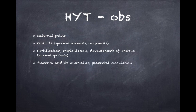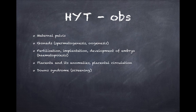Placenta and its anomalies — everything from development to structure, function, and anomalies is very important. Also know about placental circulation. Down syndrome: the screening and diagnosis part is extremely important in OBG. Know the risk factors, how to identify it ultrasonically or using labs, the risk assessment, and the investigations required.